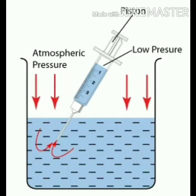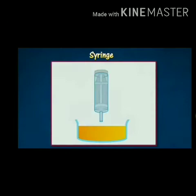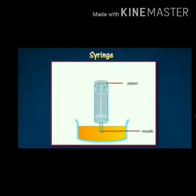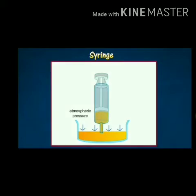The syringe works on the existence of atmospheric pressure. When the nozzle of a syringe is dipped in a liquid and its piston is withdrawn, the pressure inside the syringe is lowered. The greater atmospheric pressure acting on the surface of the liquid then pushes the liquid up into the syringe.